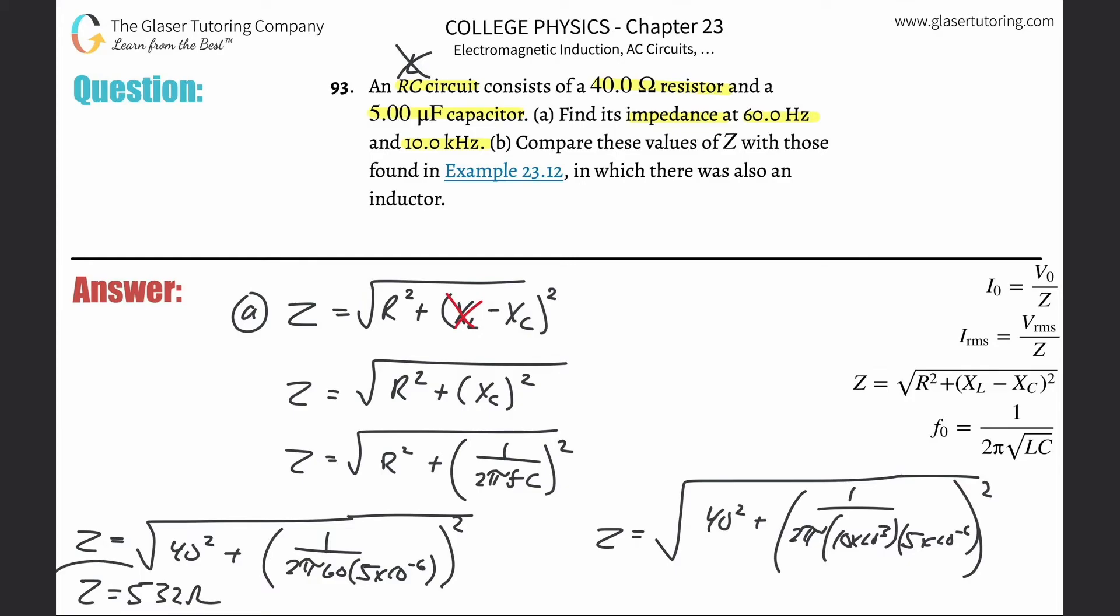The second one is square root of 40 squared plus, in parentheses, one divided by two pi times 10 times 10 to the third times 5 times 10 to the minus sixth, close the double parentheses and square it. This is 40.1 ohms.